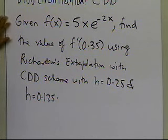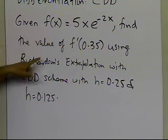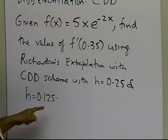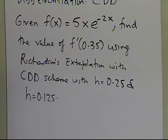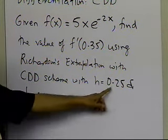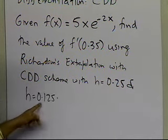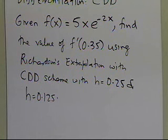The example is basically saying: find the value of the derivative of the function 5x·e^(-2x) at the data point x = 0.35, using the Richardson extrapolation formula for the central divided difference scheme, with a step size of 0.25 as the first step size and 0.125 as the second step size. We'll calculate the values using the central divided difference scheme first, and then use those two in the Richardson extrapolation formula.